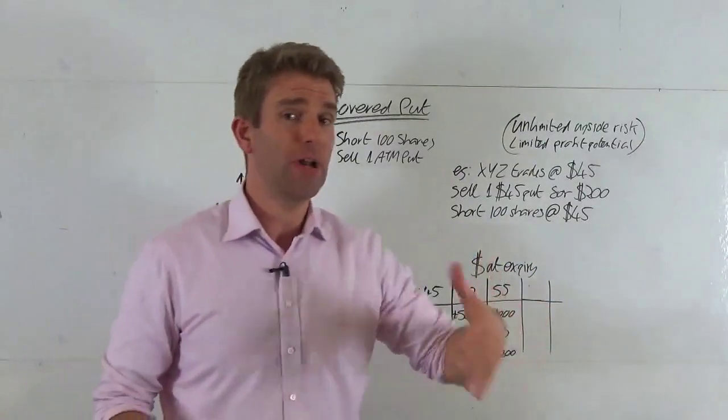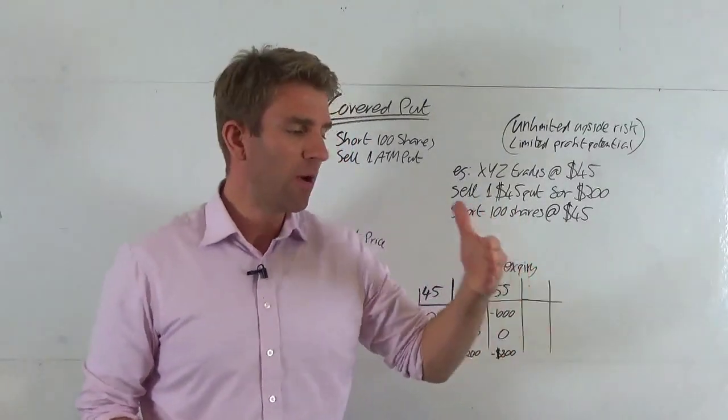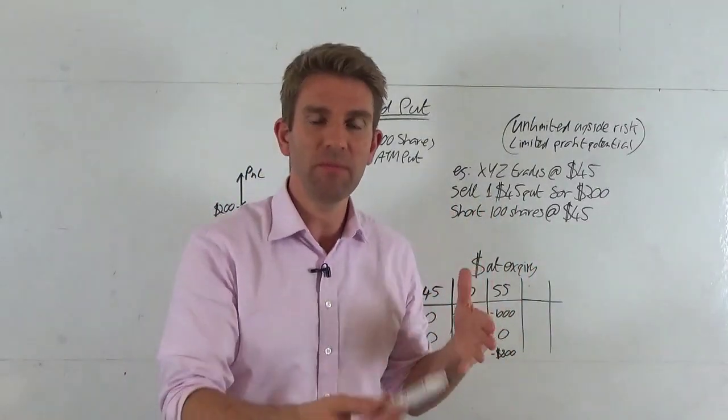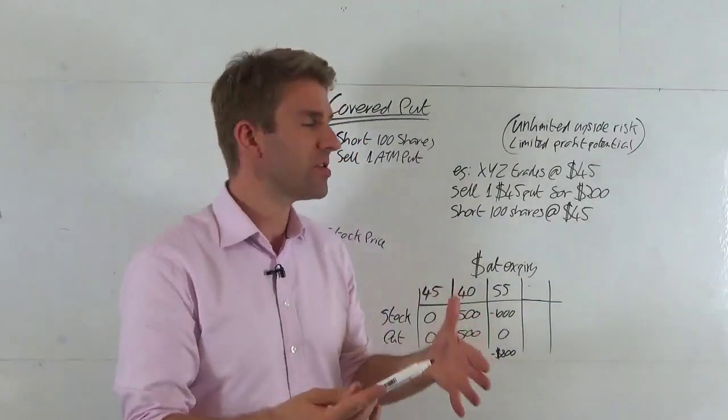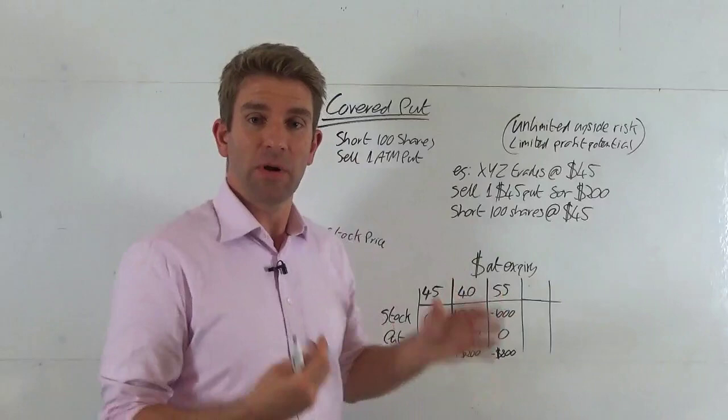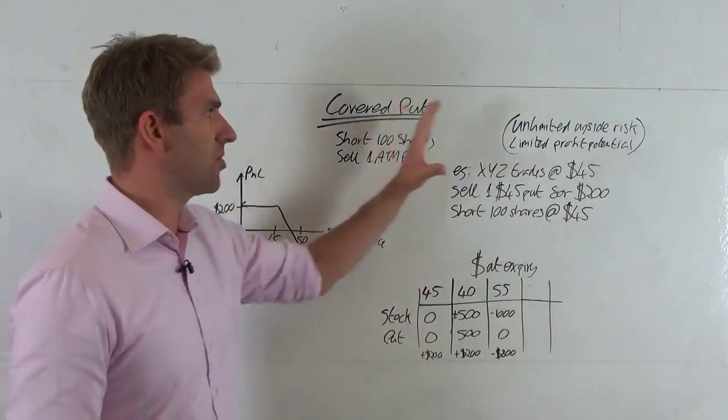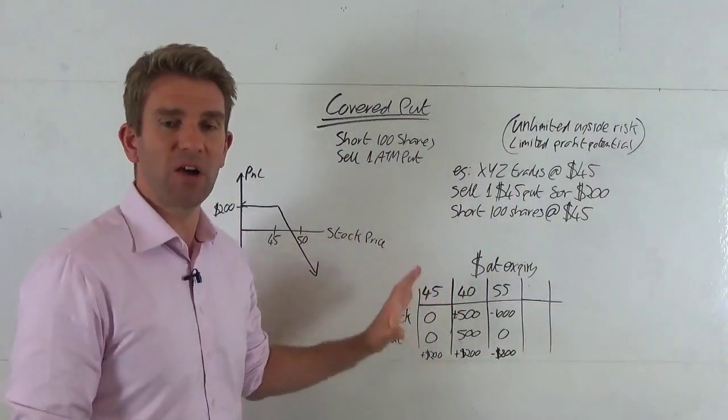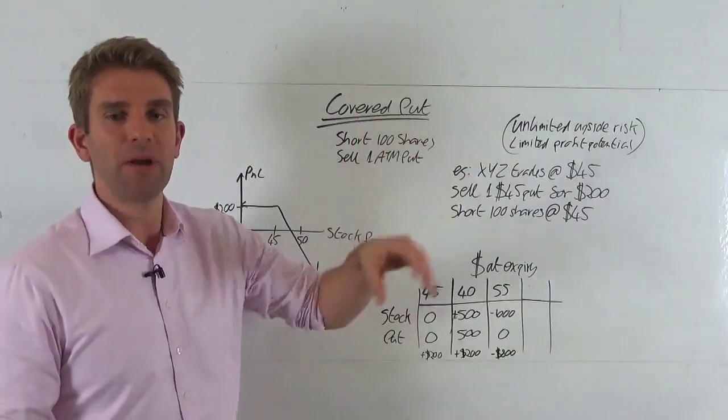It could be you're already short and it comes to a level where you think that's not going to go any further, but I want to take some premium from selling these puts. Or it could be a strategy that you employ directly on it. So let's have a look at the payoff graph and let's have a look at some examples of prices and values at expiry to see if it's something that might fit in with a trading thesis you've got for a market out there.